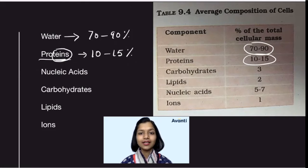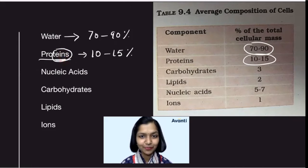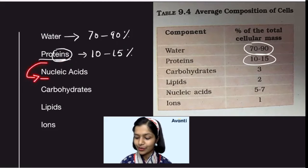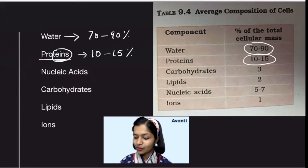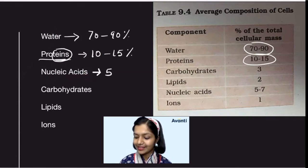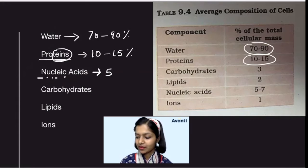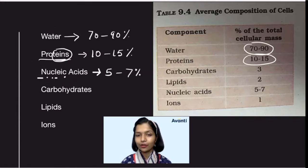Now next. Protein ends with the letter N. The next molecule you have is nucleic acid. Can you count the number of letters in 'acids'? It's 5 — 1, 2, 3, 4, 5. Can you count the number of letters in 'nucleic'? It is 7 — 1, 2, 3, 4, 5, 6, 7. So what's the percentage of nucleic acids in your cell? 5 to 7%.